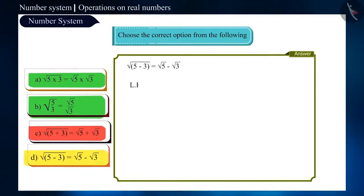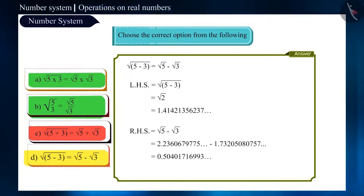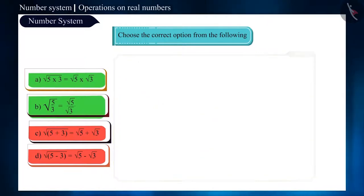Now look at the fourth and the last option. Here also, the value of root of 2 is not equal to the value of root of 5 minus root of 3. This means that this option is also wrong.